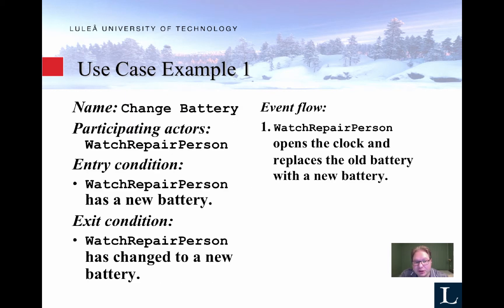The use case description looks like this. We have the name 'change battery' and the participating actor is the watch repair person — because it's a change battery use case, only the watch repair person is involved, as illustrated in the previous diagram. The entry condition is that there is a new battery, the exit condition is that we have changed the battery, and the flow of events is: open the clock, replace the old battery with the new battery.